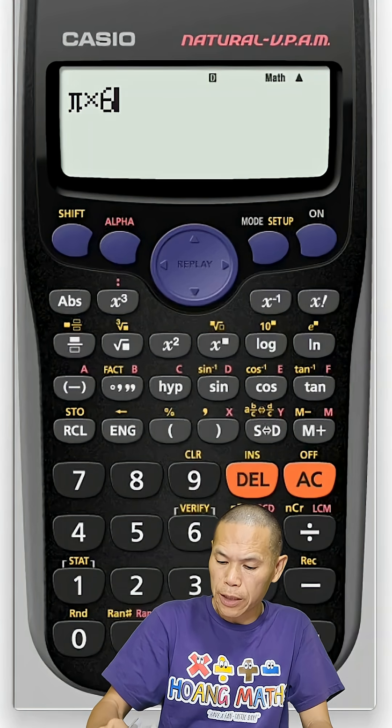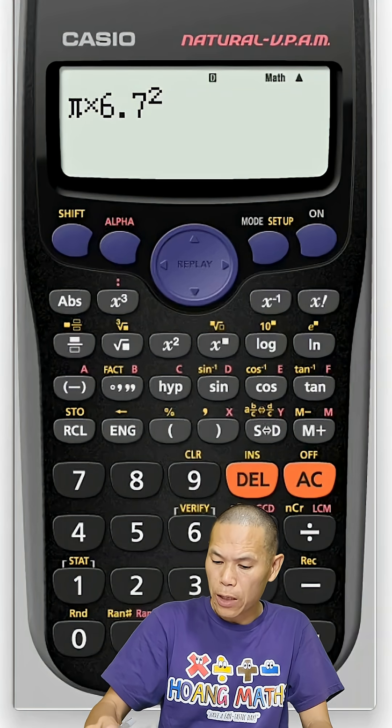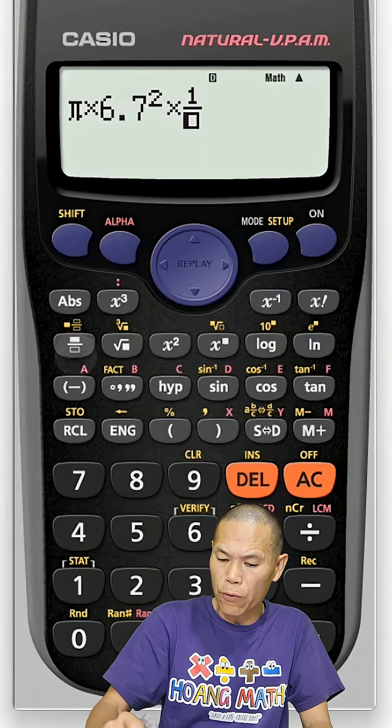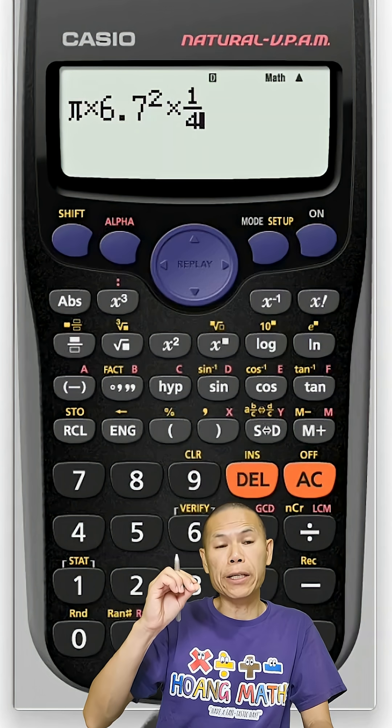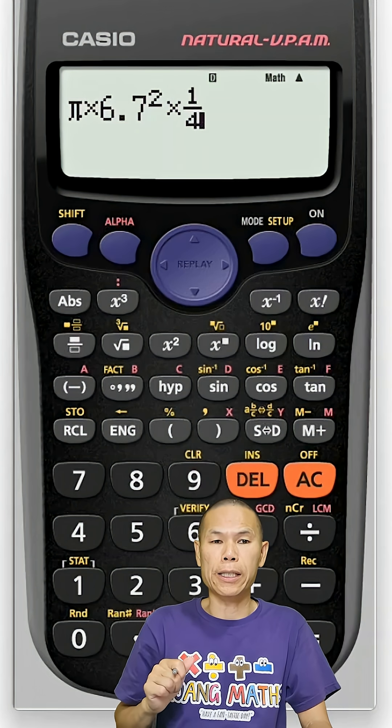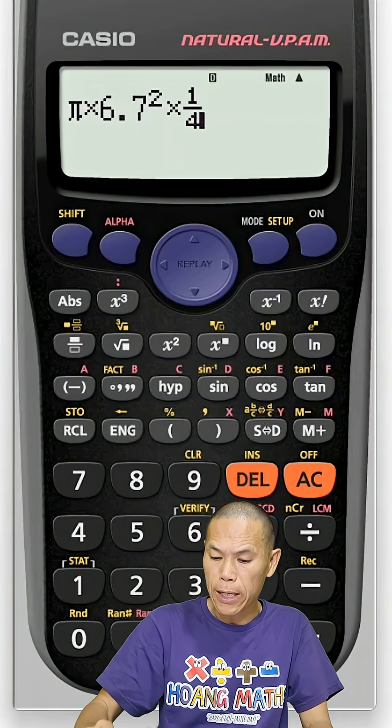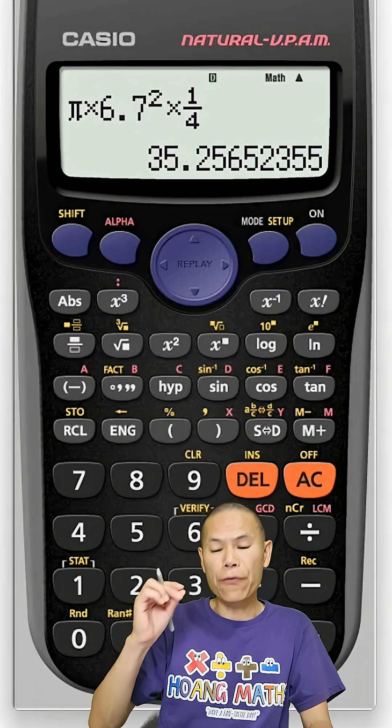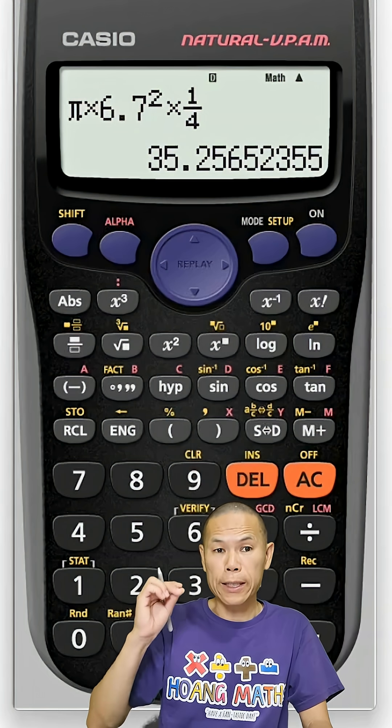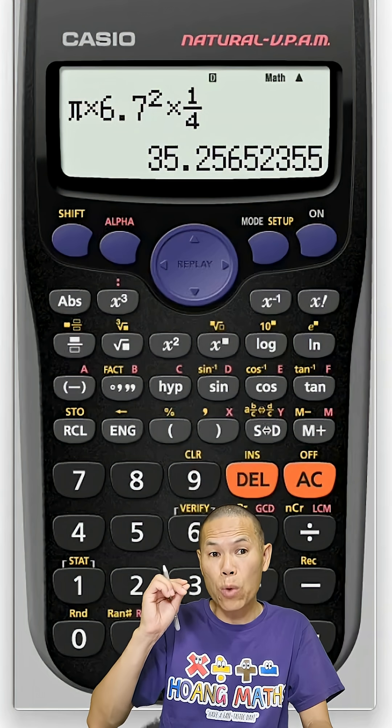Or 90 degrees over 360, or you can just divide by 4 or times a quarter. Okay, so that is 35.25 and so on. So correct to one decimal place.